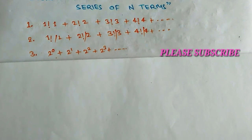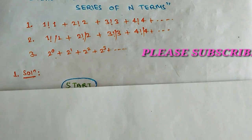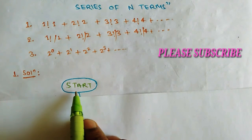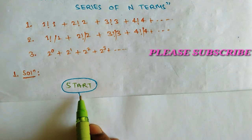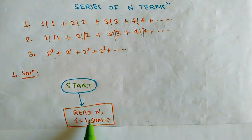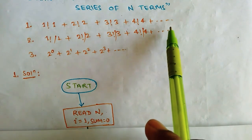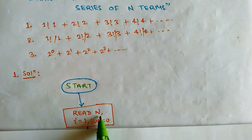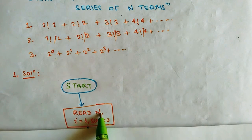We will see one by one. Start here — the start symbol is an elliptical box. After starting, we have to read the variable. We have n, as the last term of the first problem is n factorial multiplied by n. This means we need to know which number to proceed up to, so we read n.